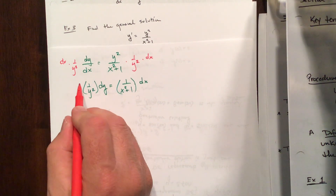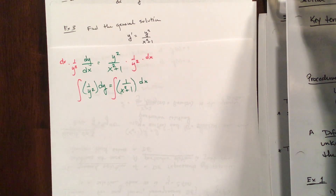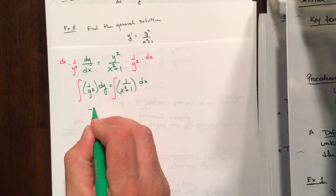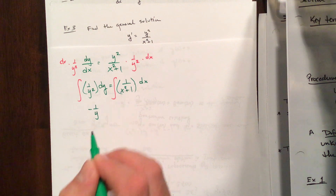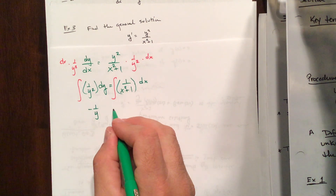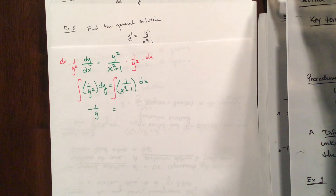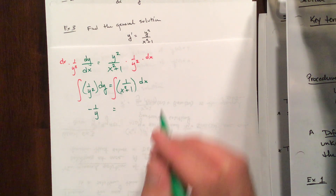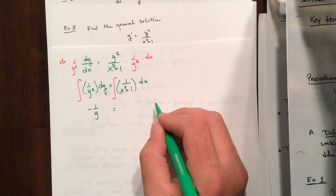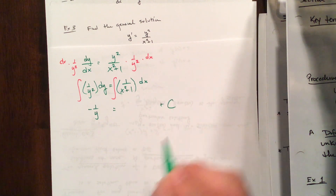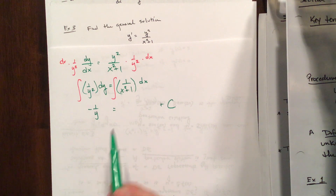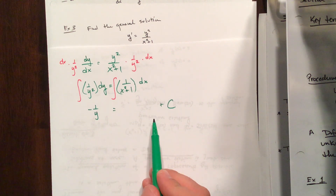Now integrate both sides. On the left, integrating 1 over y squared gives negative 1 over y. Henceforth, only the independent variable side gets plus c. On the right, 1 over x squared plus 1 integrates to the arctangent of x — one of the integrals from Calculus 2. So we have negative 1 over y equals arctan of x plus c.